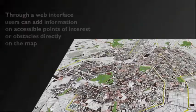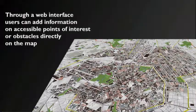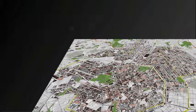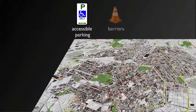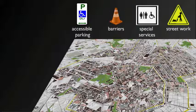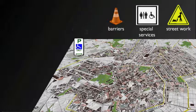Through a web interface, users can add information on accessible points of interest or obstacles directly on the map. Dedicated parking, barriers, special services, street work, and many other things can be added with a single click of the mouse in the desired location.